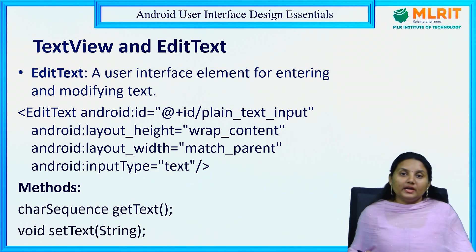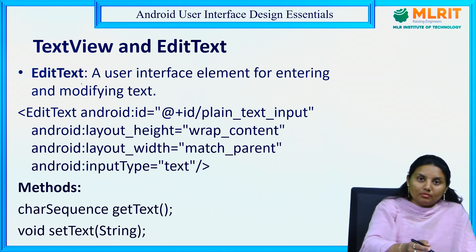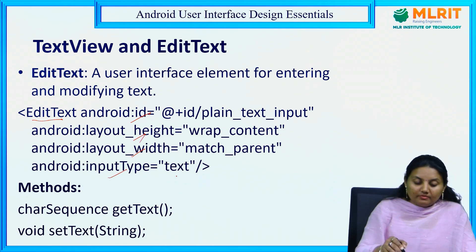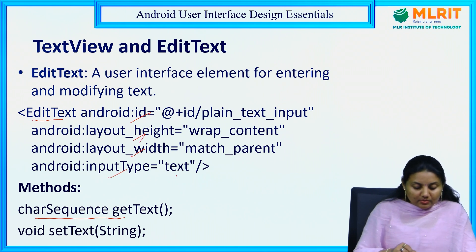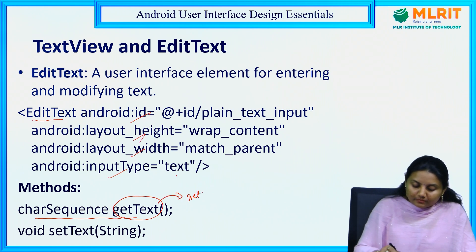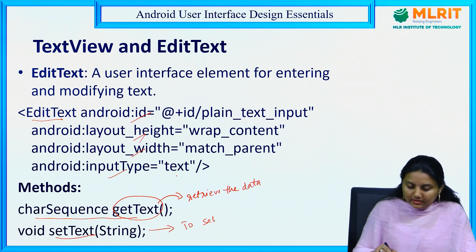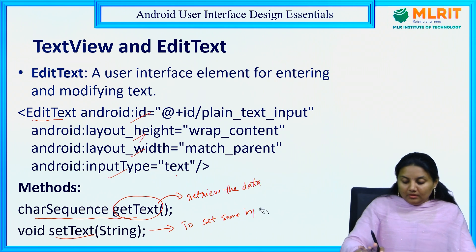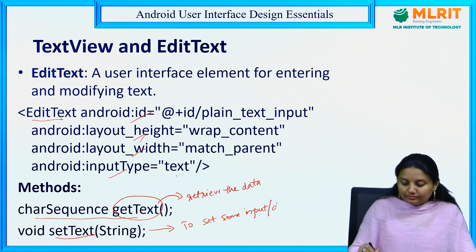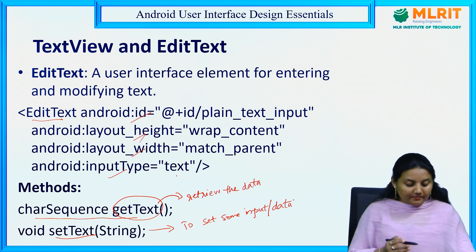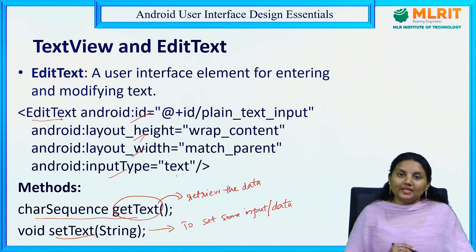Text view and edit text we have already seen in many previous session examples. For edit text, the user can modify the text. It uses the EditText tag with id, height, width, and input type set to text. The methods here are getText() to retrieve data and setText() to set data. These are mostly used when the edit text component is used to extract content to your Java part.